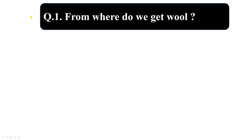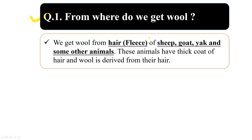From where do we get wool? We get wool from the hair of sheep, goat, yak, and some other animals. This hair is also called the fleece of the animal. These animals have a thick coat of hair and wool is derived from their hair.